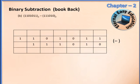We'll do another one which is a textbook question: 1101011 minus 111010. Starting from the right: 1 minus 0, the difference is 1. 1 minus 1, the difference is 0. 0 minus 0, the difference is 0. 1 minus 1, the difference is 0. Here it is 0 minus 1, so we borrow: the 1 turns to 0 and the 0 turns to 1. Now it is a borrowed 1 and here also 1, so the difference is 1.